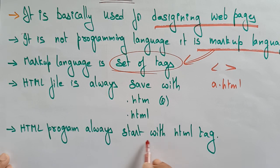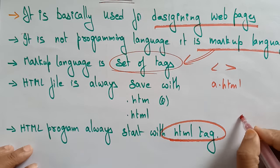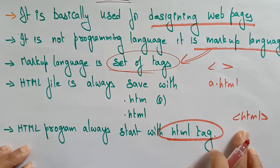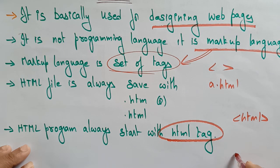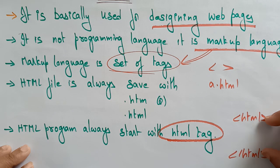HTML programs always start with the <html> tag. The program starts with the opening <html> tag, you write everything inside it, and then you end with the closing </html> tag. Both the opening and closing tags must be present for the complete page to render in the browser.